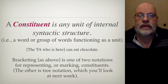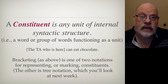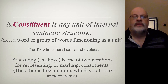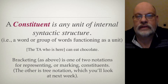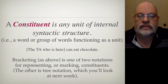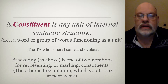From the example we used in the last video — the TA who is here can eat chocolate — the TA who is here is an internal unit of structure; it's something that can be referenced by other rules in the system. We have two notations for representing constituency. One is to use brackets, like you see here in this structure. If you have a pair of square brackets around a structure, then we identify it as a constituent. The other representation is tree notation, which we will do in a later video.